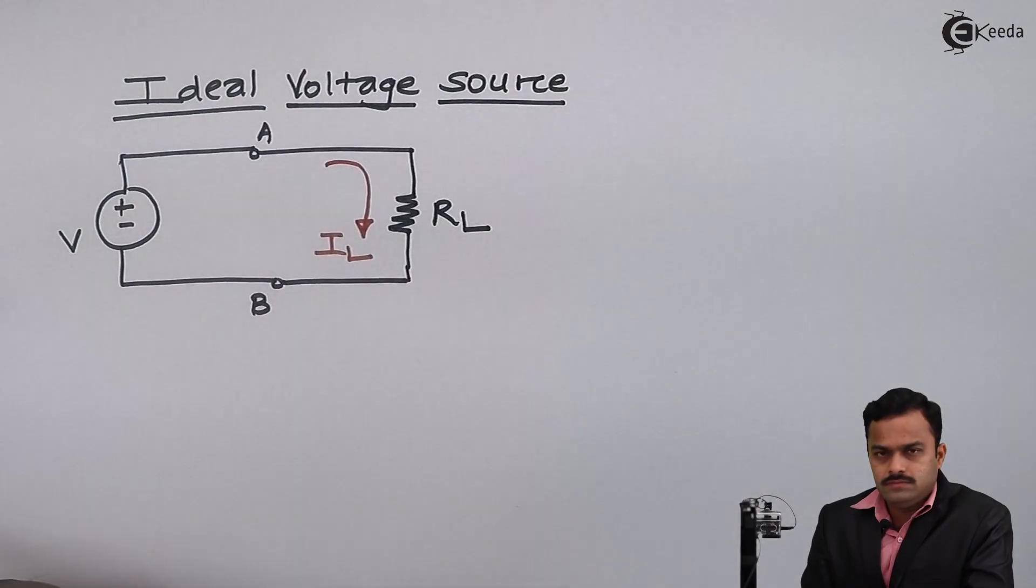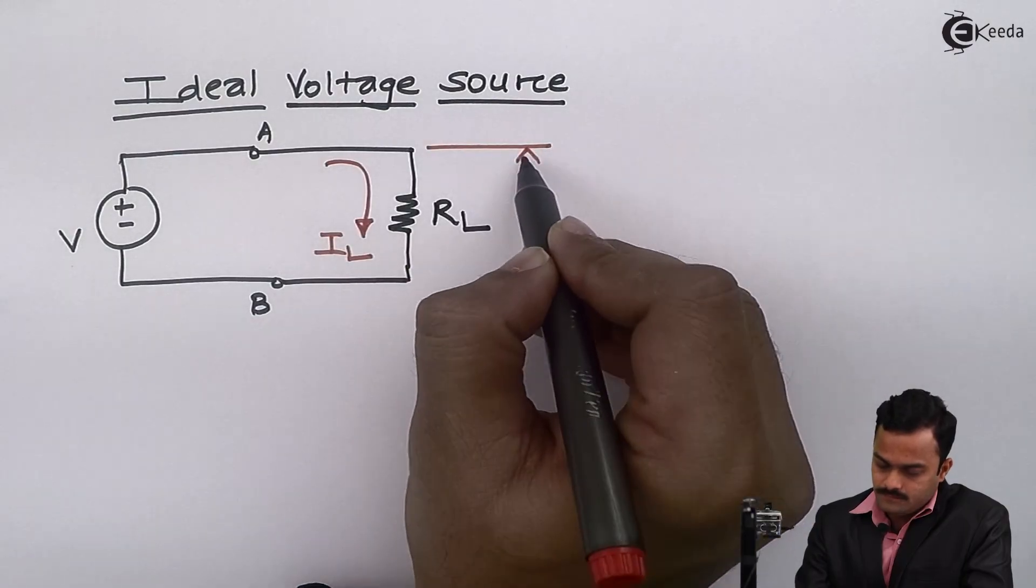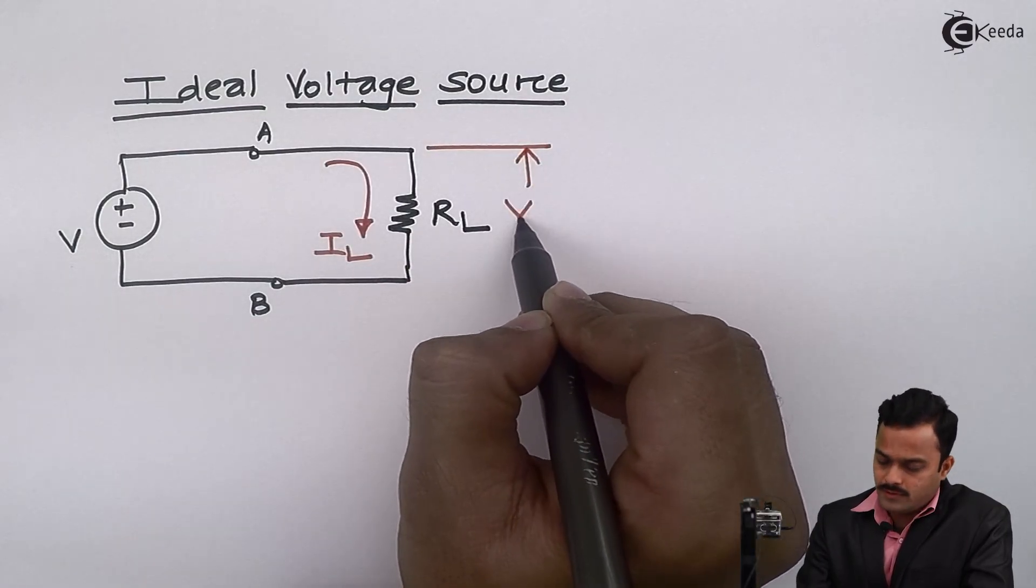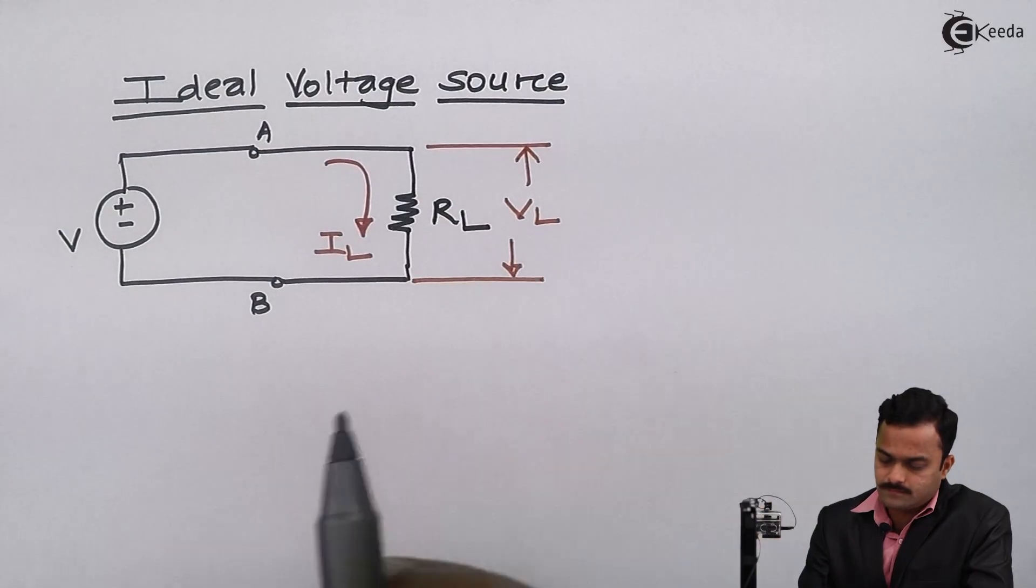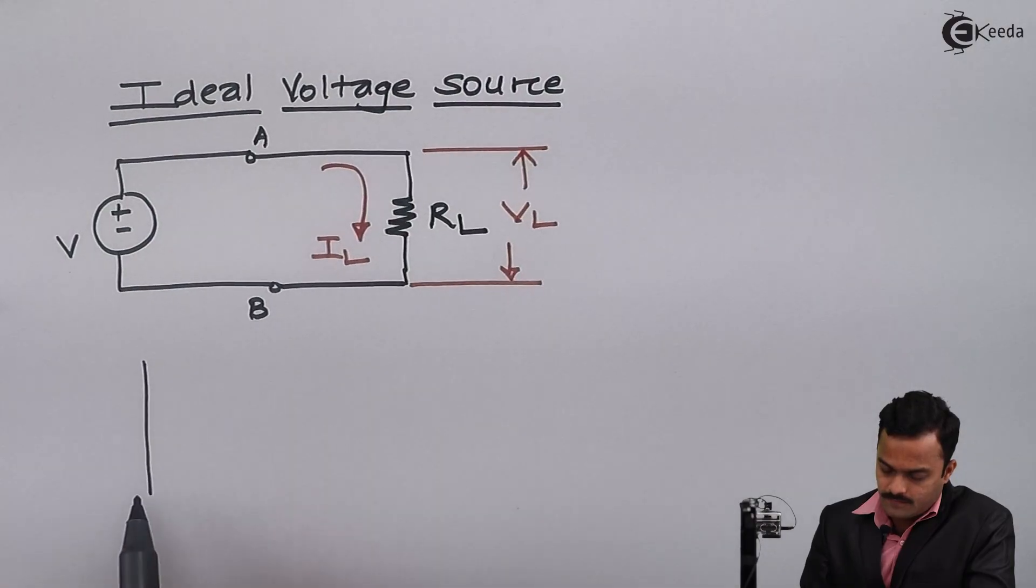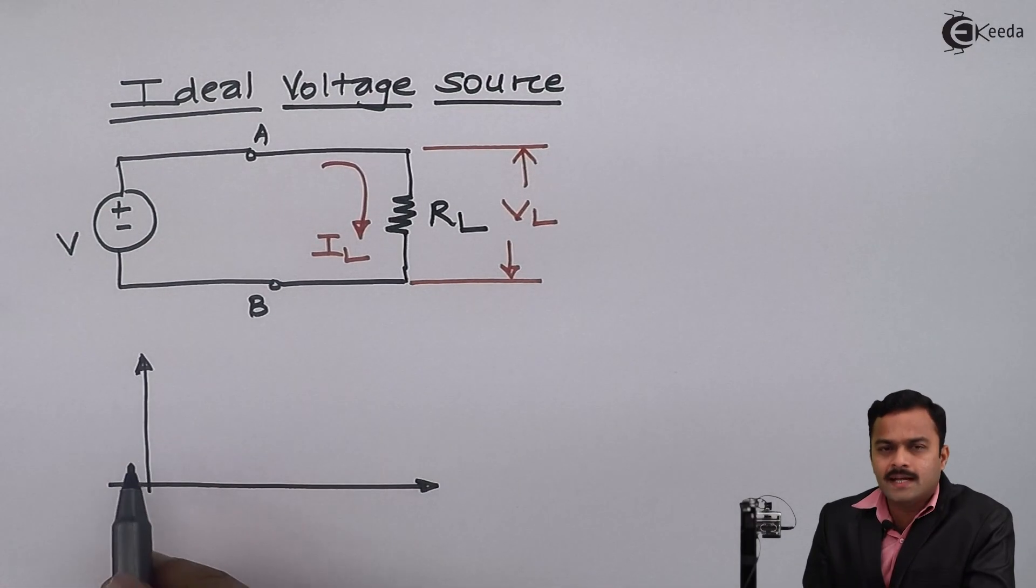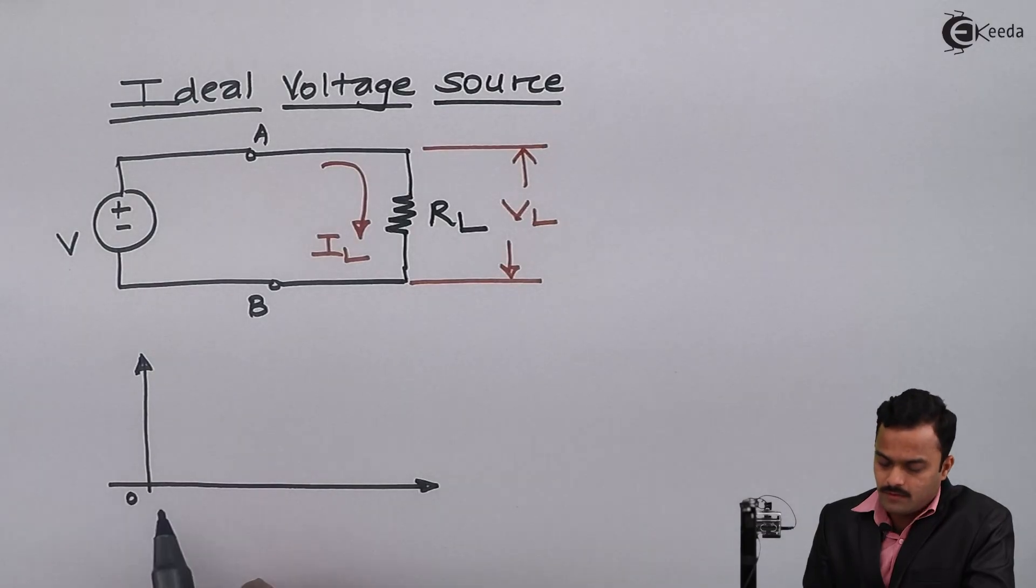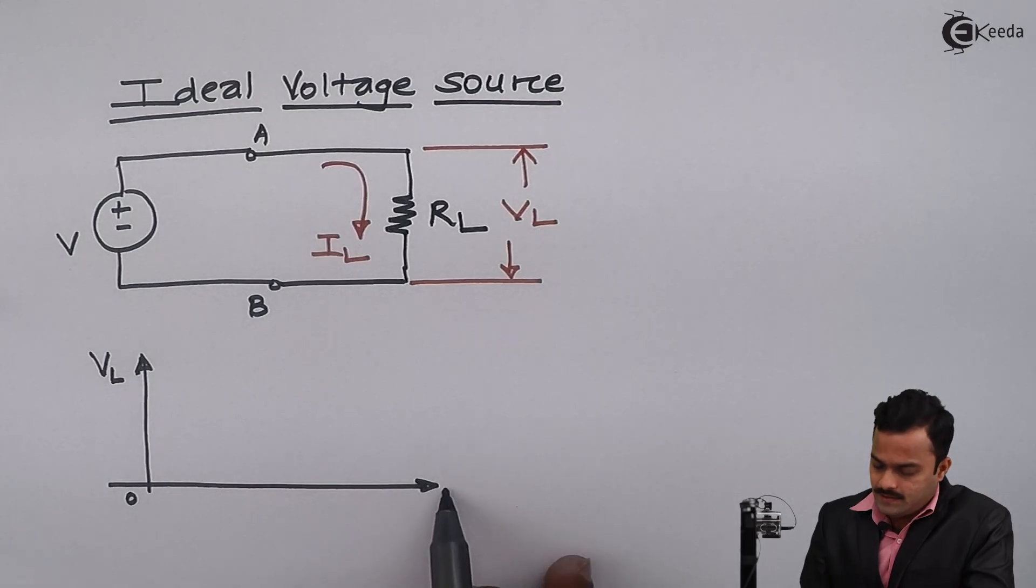Because of this IL, I will get a voltage VL across it. Now I want to draw a graph of this ideal voltage source - how the characteristic of this ideal voltage source looks like, a graph of VL against IL.